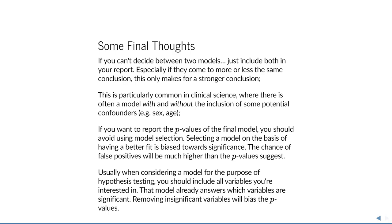If you want to report p-values of the final model, you should really avoid using model selection, because if you select a model on the basis of having a better fit, you will get lower p-values — the chance of a false positive will be much higher than the p-value suggests. Usually when considering a model for hypothesis testing, you should include all variables you're interested in — this model is already the answer to which variables are significant. Removing insignificant variables will just bias the remaining ones. That concludes this lecture.